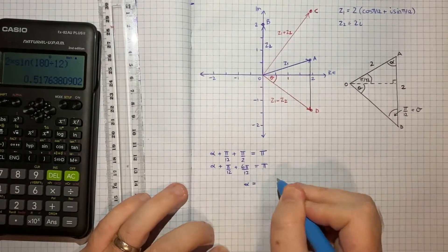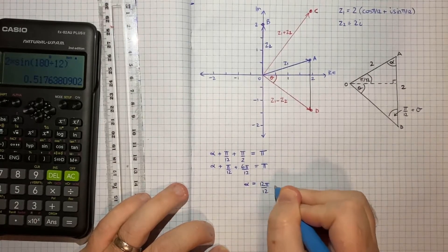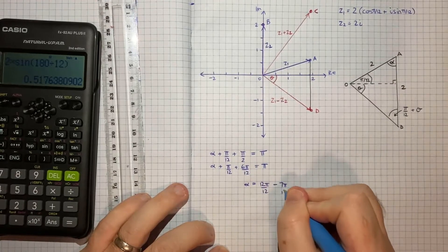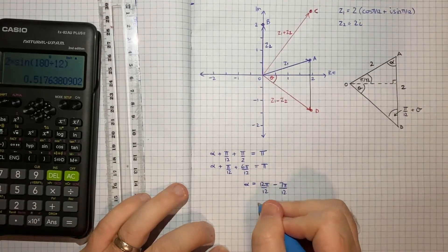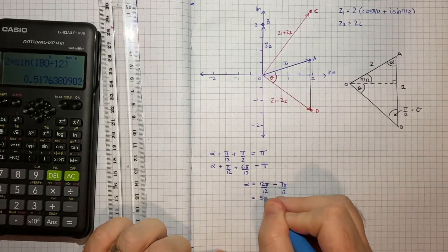So if I just isolate alpha, alpha will equal, I'll call this 12 pi on 12, minus 1 plus 6 is 7 pi on 12. So alpha will equal 12 minus 7 is 5 pi on 12.